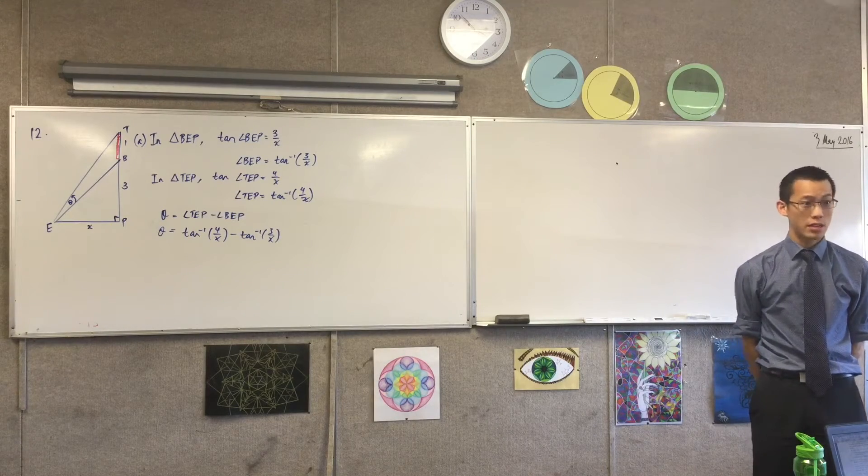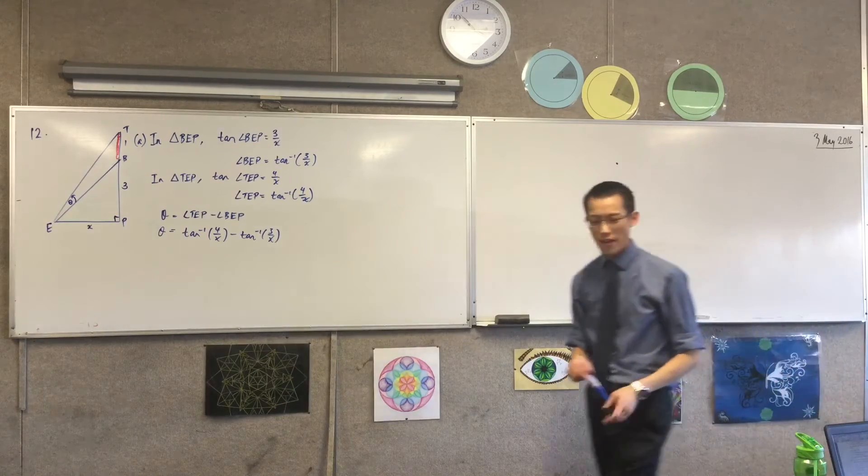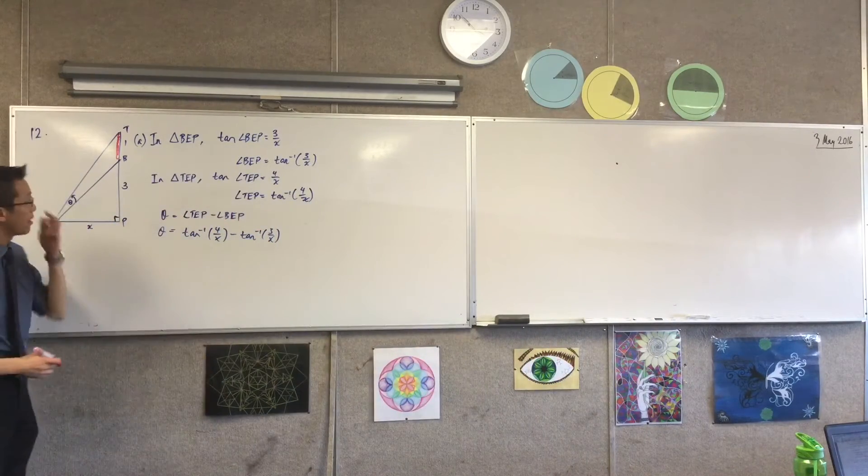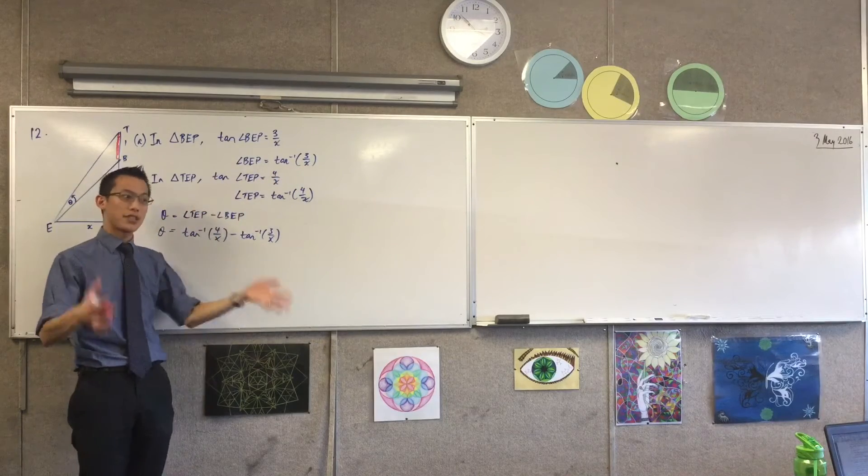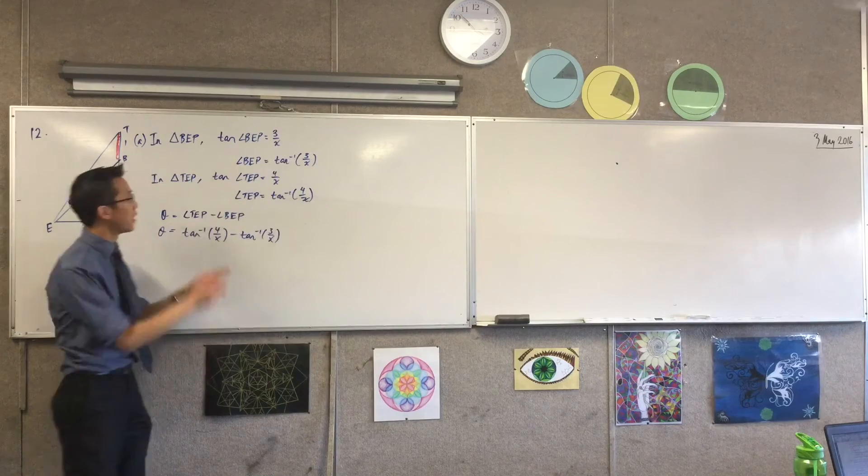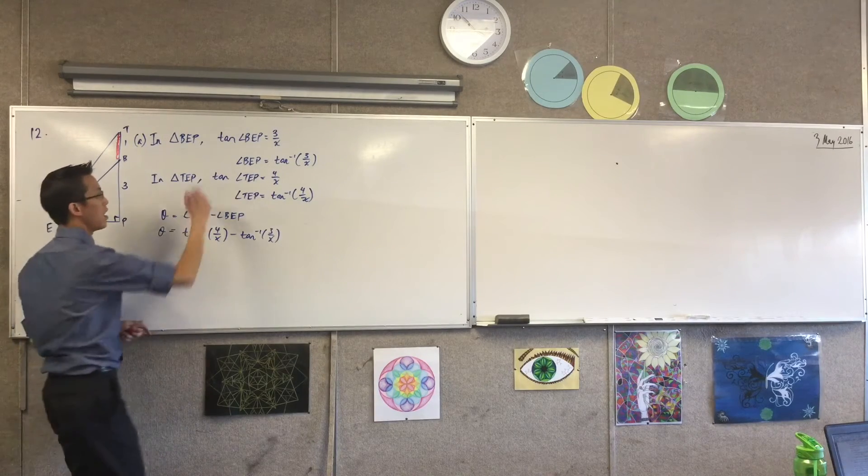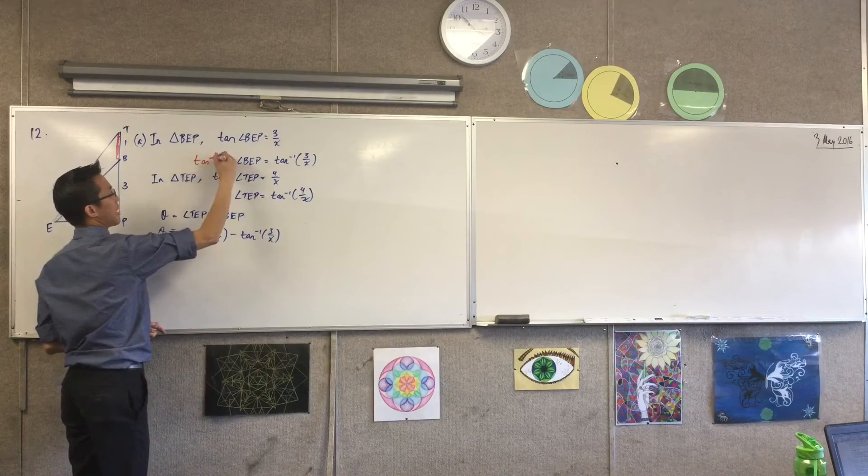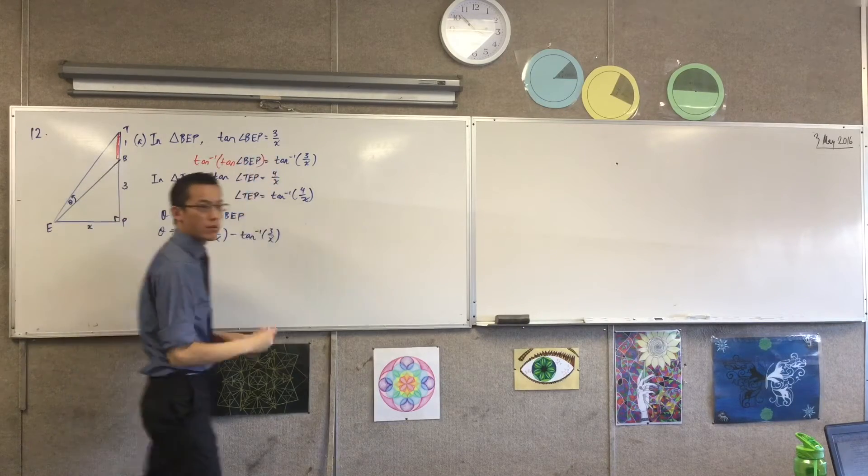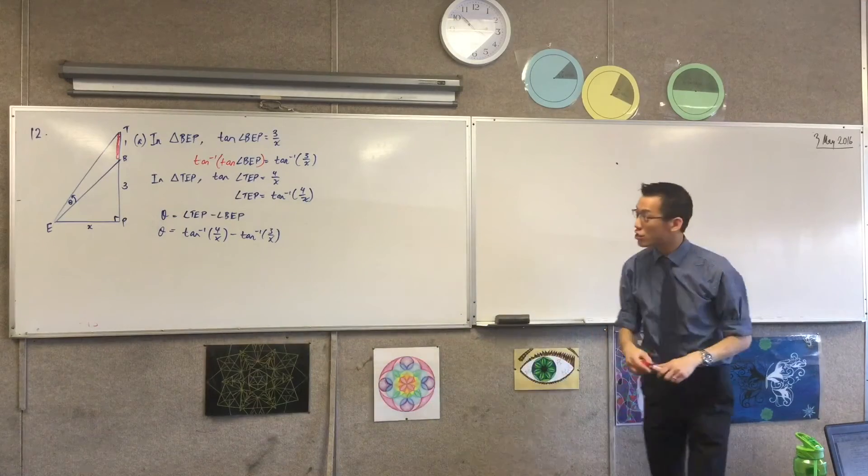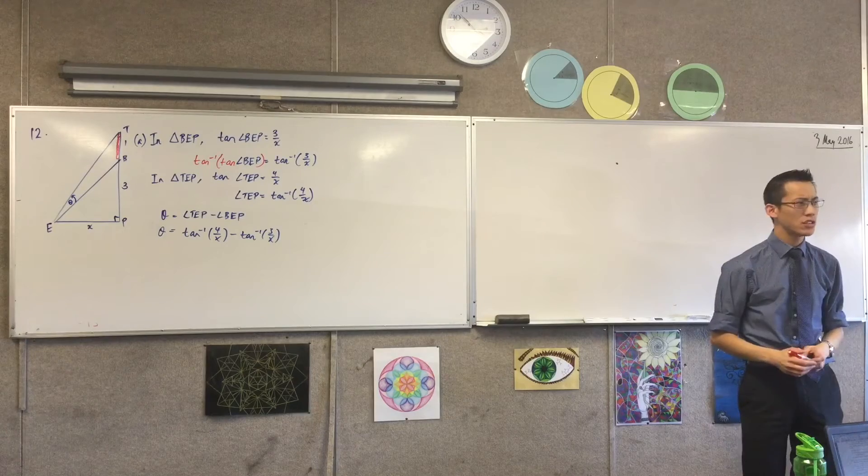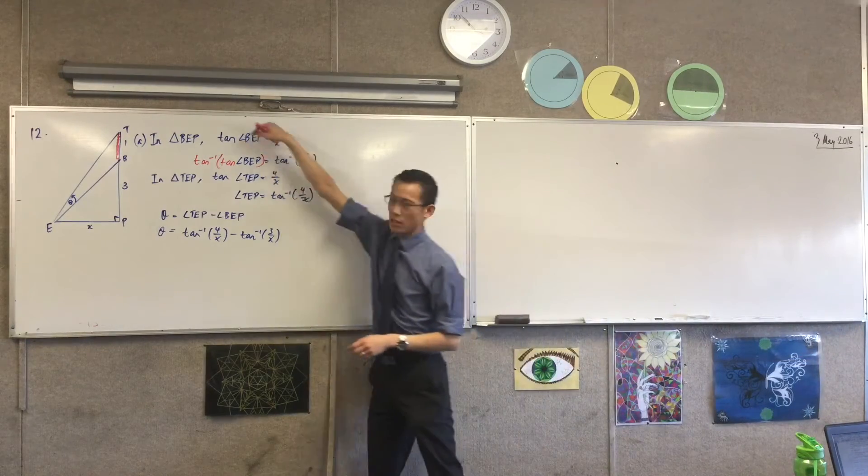I have taken tan inverse of both sides, correct. So I've implied something that I have not said. Over there on the right hand side, sure enough tan inverse of 3 over X is tan inverse 3 over X, but on the left hand side I've missed something out. I actually should really say this.